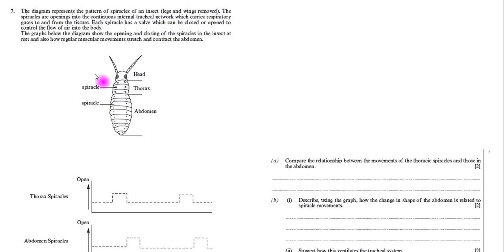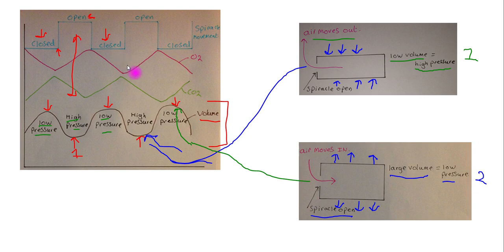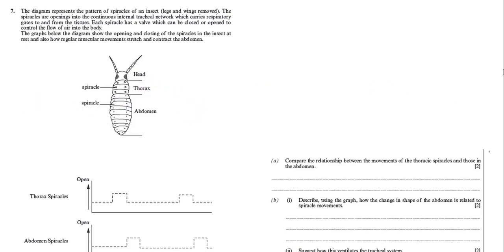This is the question, from January 2011. The question gives information about the insect and an accompanying diagram. I want to highlight that there is a thoracic region with spiracles, and an abdomen that also has spiracles. This question will allow us to understand in more detail what's happening on the graph and how air actually moves through the tracheal system.